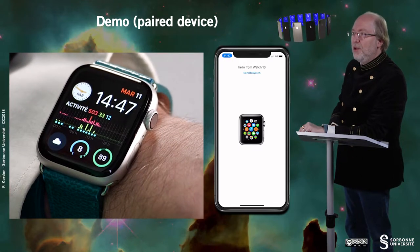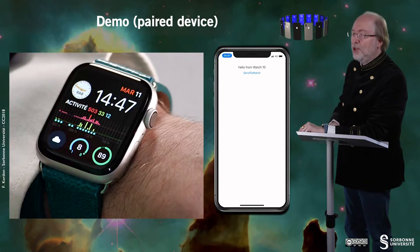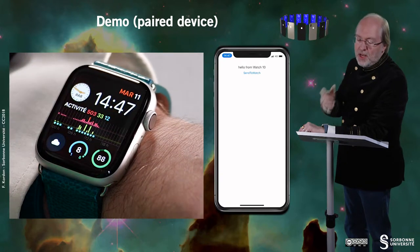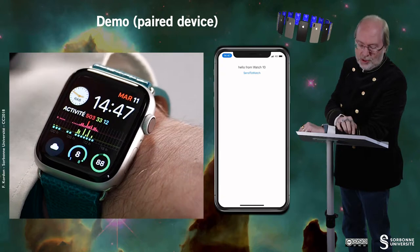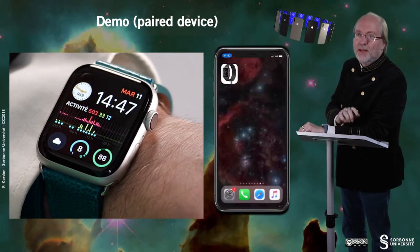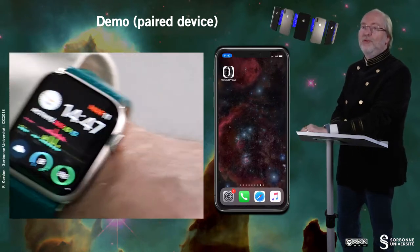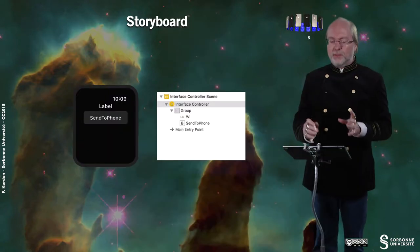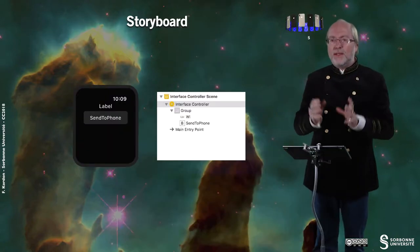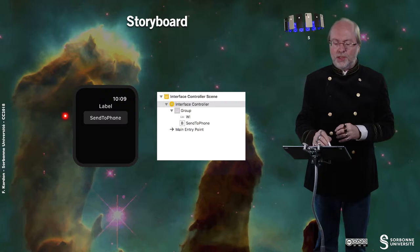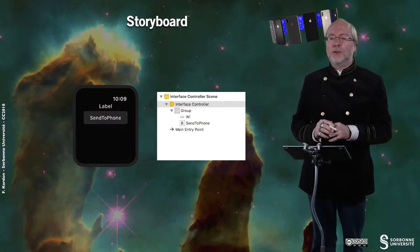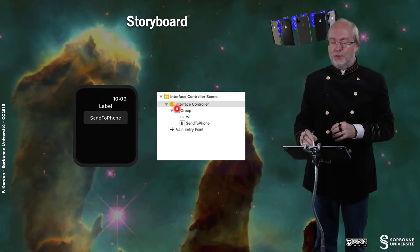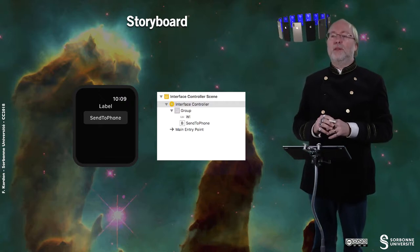If I quit the application on the watch, then you see that the icon disappears again, and I can leave the application on the phone too. Let's just have a quick look at the storyboard — that is very simple. You just have the main entry point for the storyboard, and you just have a label and a button.